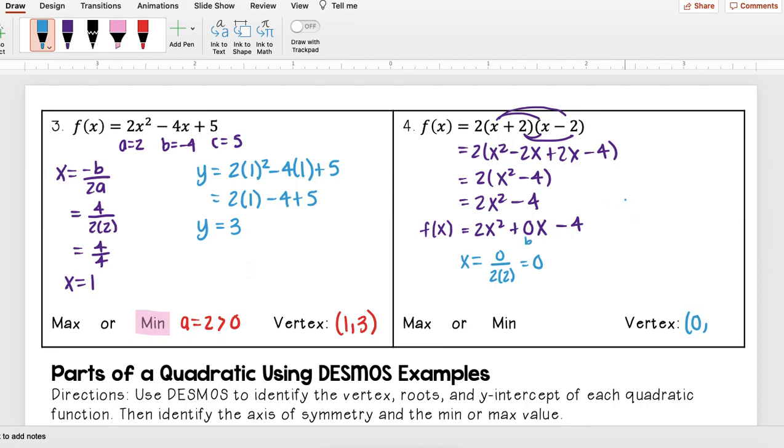And then to find my y value, I'm just going to plug in 0 everywhere. And I see I get -4. Here my a value 2 is greater than 0, so this is going to be a minimum.